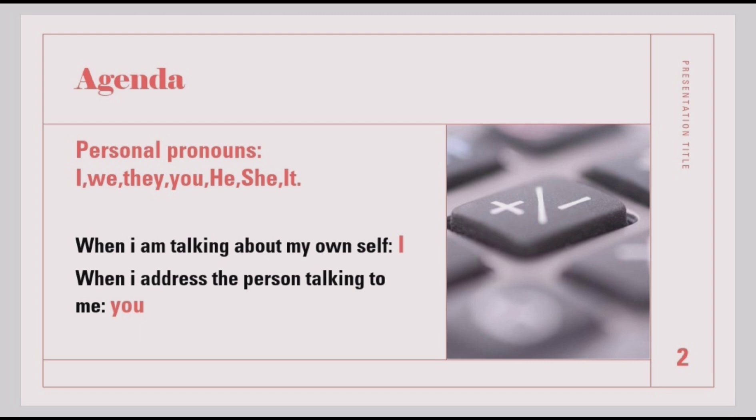The personal pronouns we talk about may be categorized as: I, we, they, you, he, she, it, or any names of people around us. When I am talking about my own self, I would use the subject or the pronoun 'I'. When I address the person talking to me, the person sitting next to me, or the person whom I am addressing, I would use 'you'.